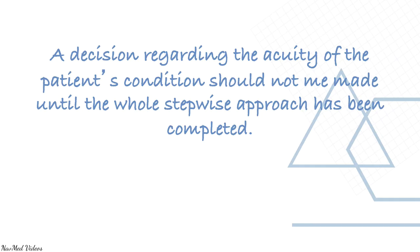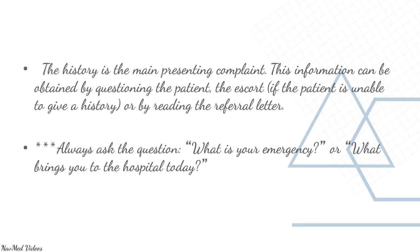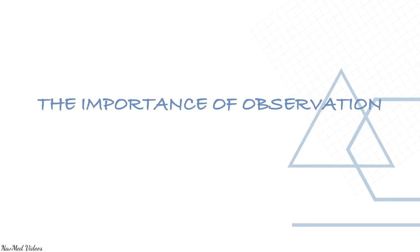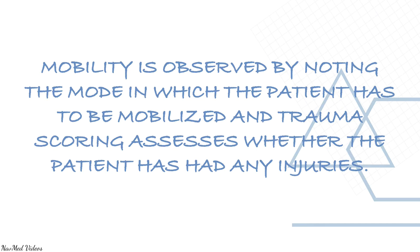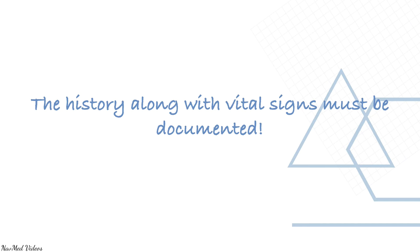A decision regarding the acuity of the patient's condition should not be made until the whole stepwise approach has been completed. The history focuses on the main presenting complaint, obtained by questioning the patient, the escort, or by reading the referral letter — always ask 'What is your emergency?' or 'What brings you to the hospital today?' Observation covers blood pressure, heart rate, respirations, temperature, pain, and the AVPU scale. Mobility is noted by the mode of mobilization, and trauma scoring assesses any injuries.